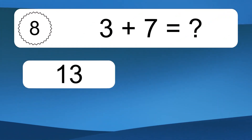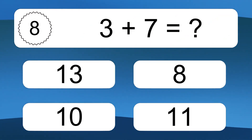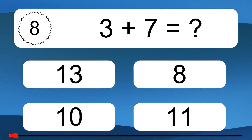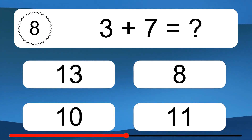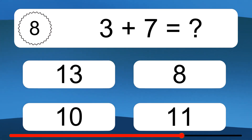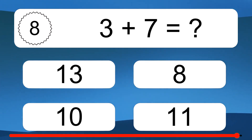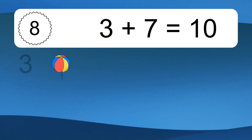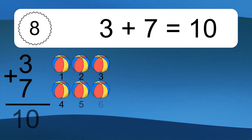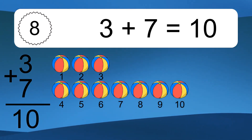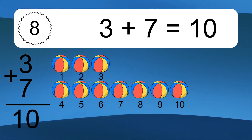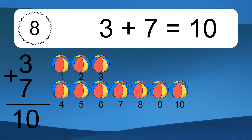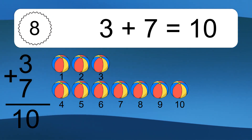Three plus seven equals what? Let's count it: one, two, three, four, five, six, seven, eight, nine, ten.